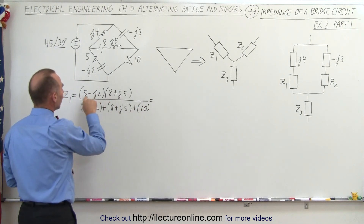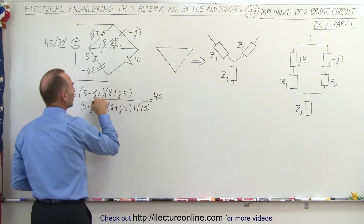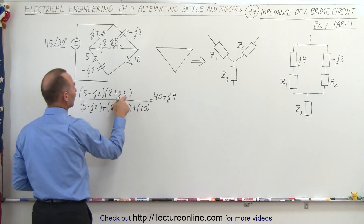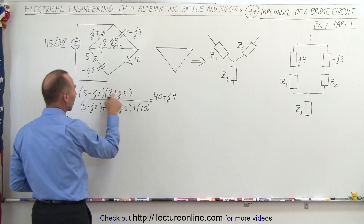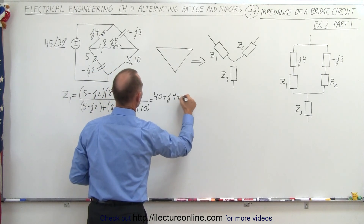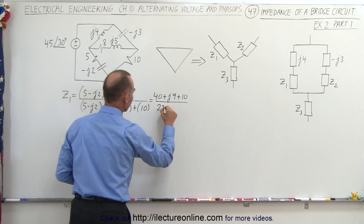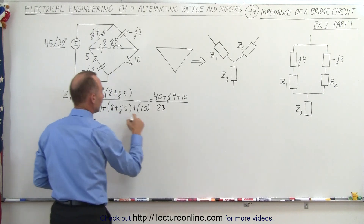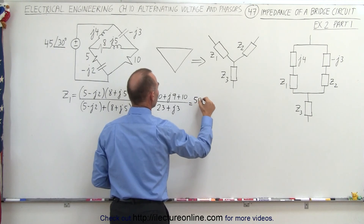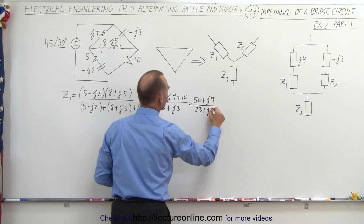When we multiply the top, we have 5 times 8 which is 40. We have 25J minus 16J, that's plus J9. And here we have 2 times 5 is 10, times the negative, times another negative because J squared is of course negative 1, so we get a plus 10. In the denominator, when we add all this together, we get 5, that's 13, that's 23. And then we have minus 2 plus 5, that would be plus J3. Simplifying gives us 50 plus J9 in the numerator divided by 23 plus J3 in the denominator.